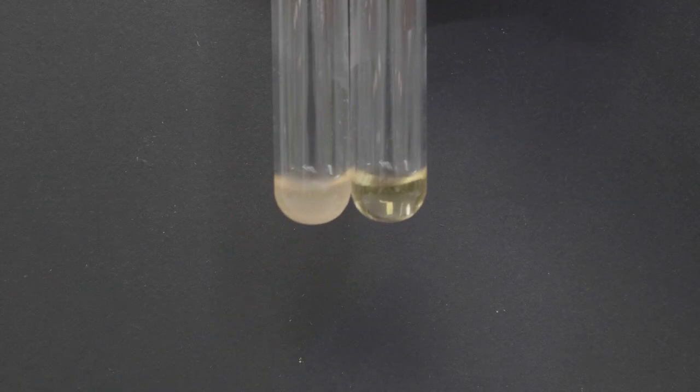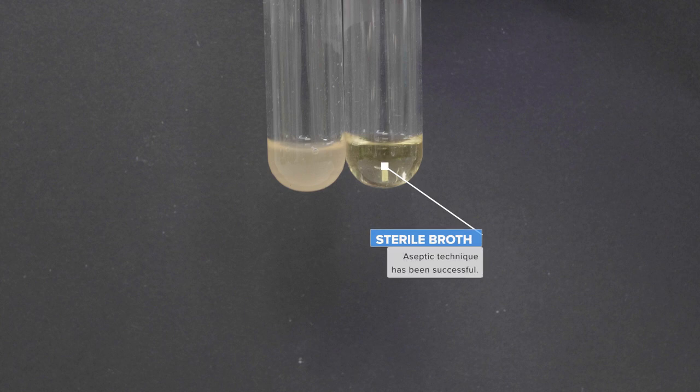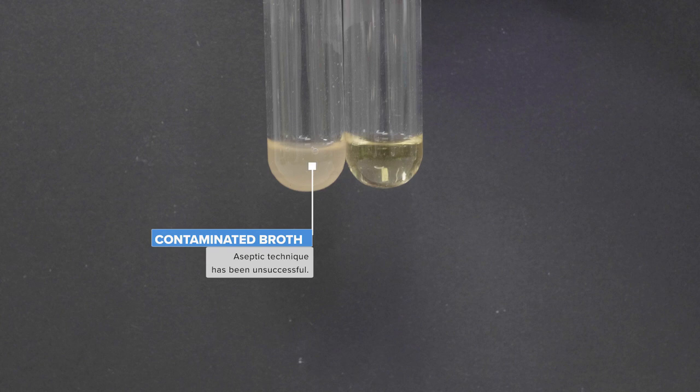Your tubes will then be incubated to allow any contaminating organisms to grow. Here we can see two example results. On the right we've got a broth where aseptic technique has been successful, whereas on the left an environmental contaminant has grown causing the media to become cloudy.